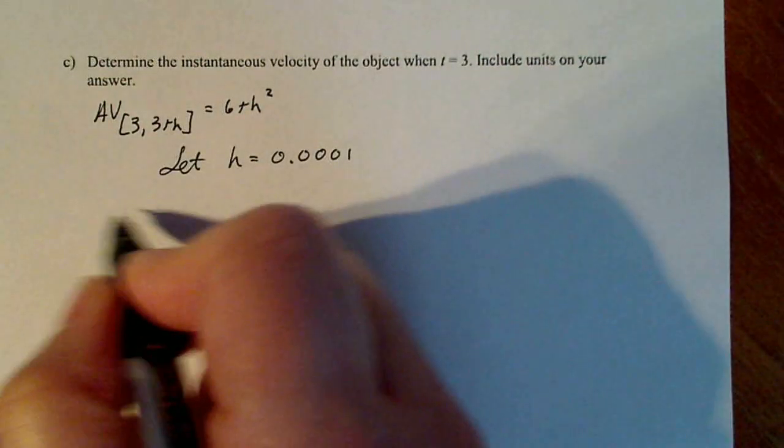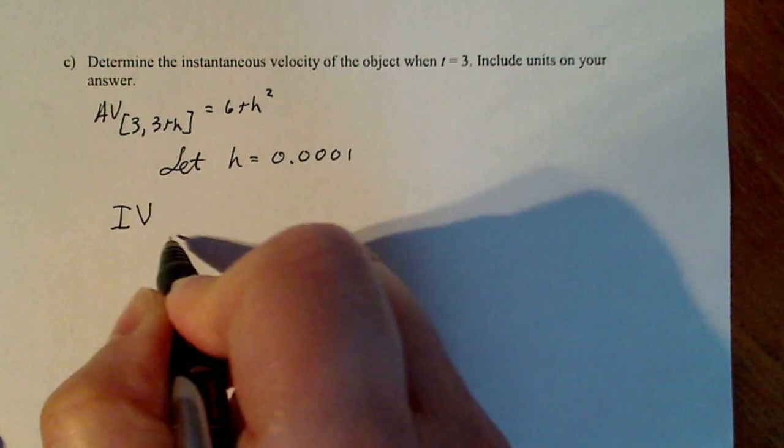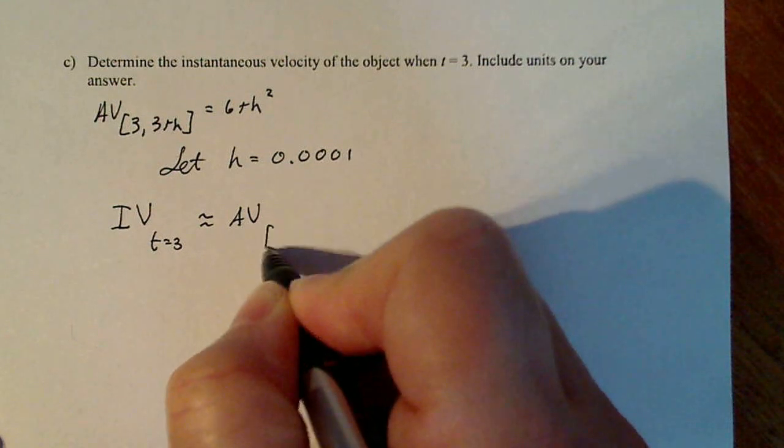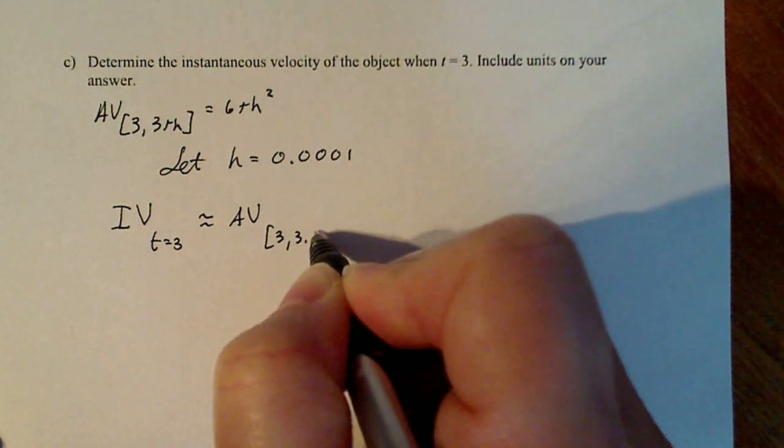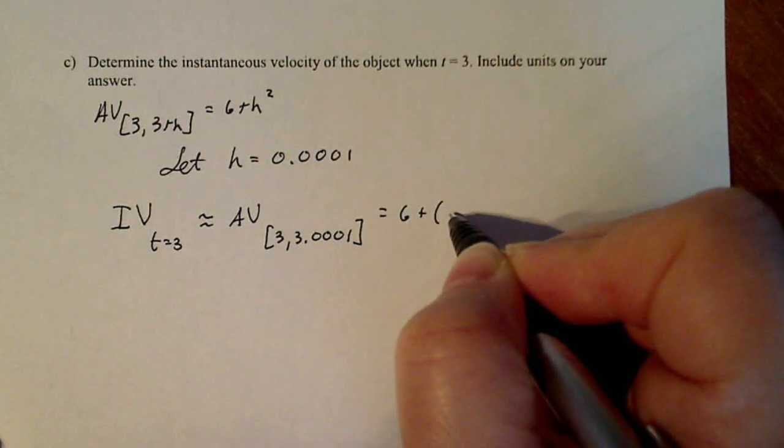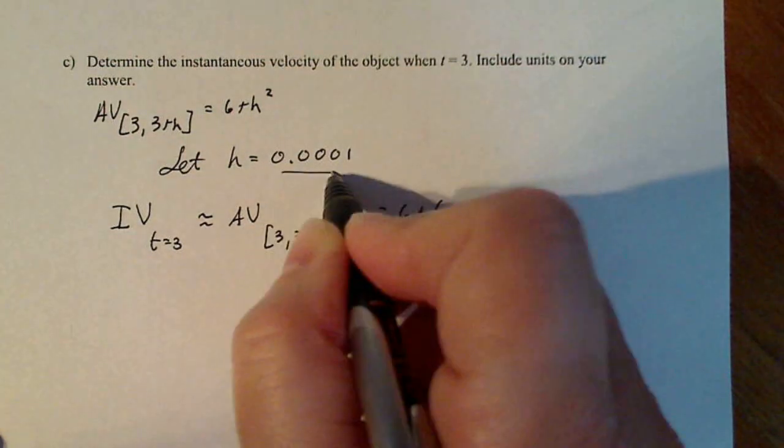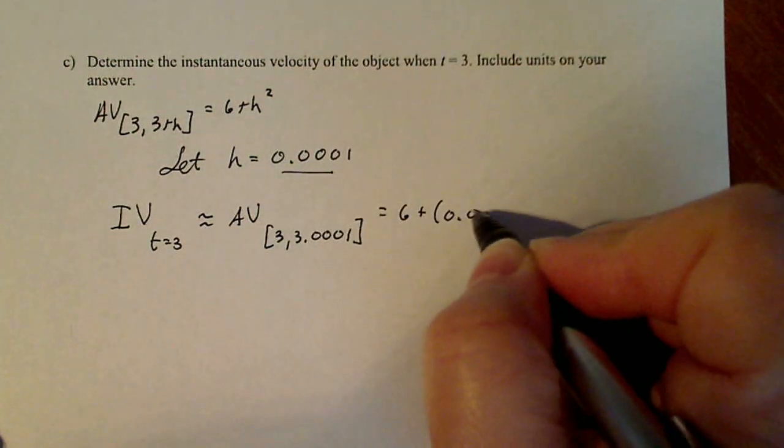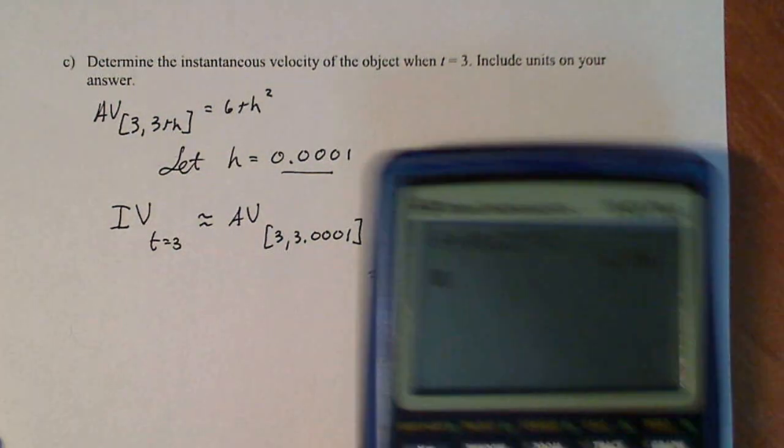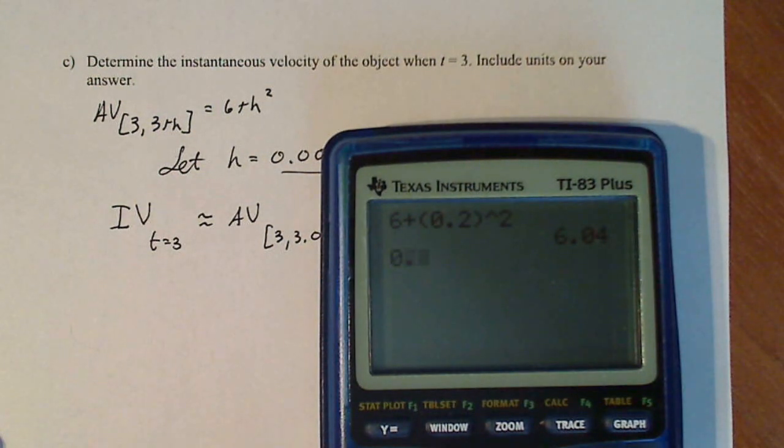So if h is 0.0001, then my instantaneous velocity at t equal 3 can be approximated by my average velocity from 3 to 3.0001. So that becomes 6 + h and my h is right here: 0.0001. So if I work that out, 0.0001 gives me a really tiny number.